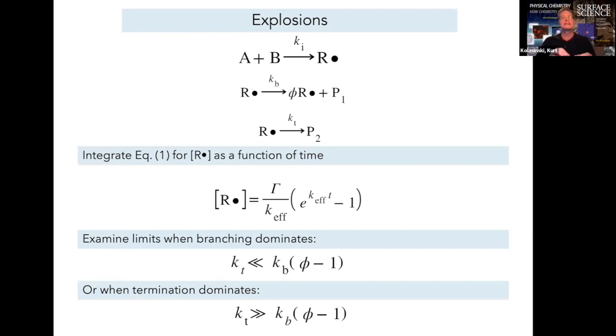And now we can examine two different limits. One limit is when branching dominates. When branching dominates, Kb is very large, large enough such that this product, Kb times phi minus 1, is much larger than Kt.